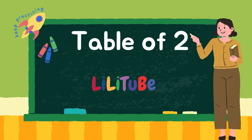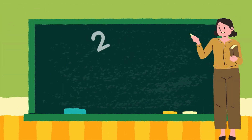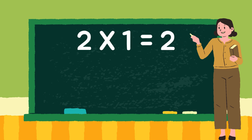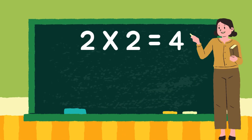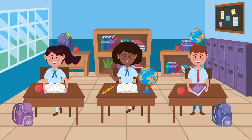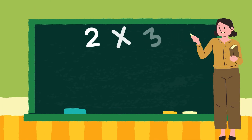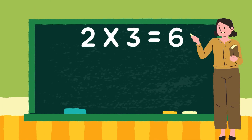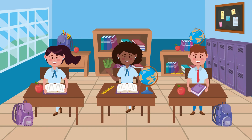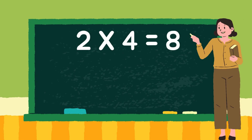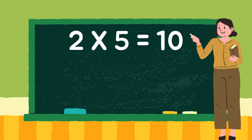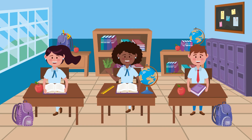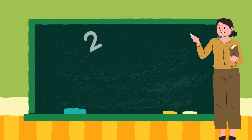Let's learn table of 2. 2 fives are 10. 2 sixes are 12.